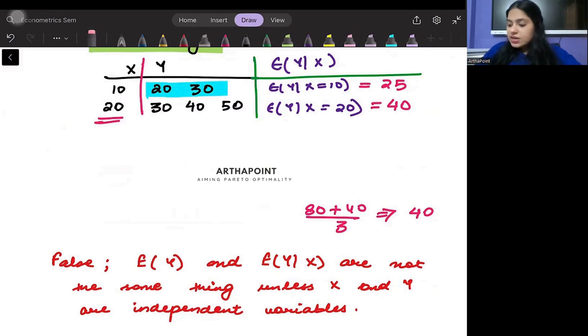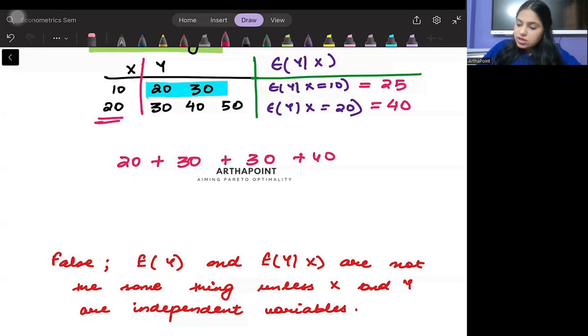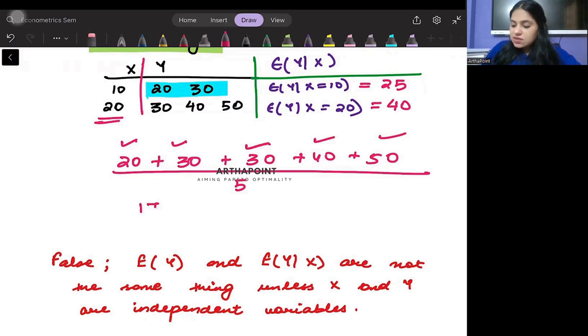So if I want to find the unconditional mean of Y, I would have simply done this. I would have done 20 plus 30 plus 30 plus 40 plus 50. There are 5 observations divided by 5. So 50 plus 50 is 100 plus 40 is 140 plus 30 is 170 divided by 5, and this is going to give me 34.